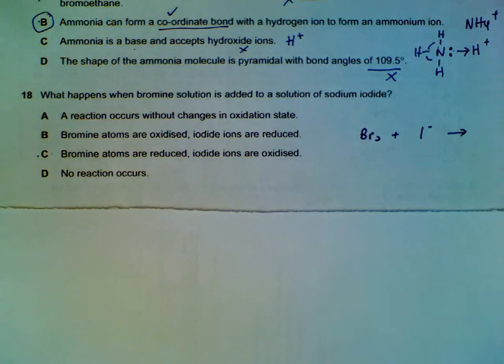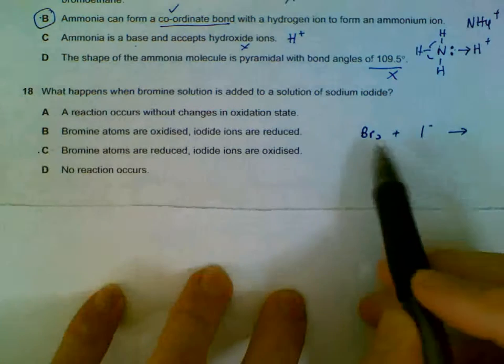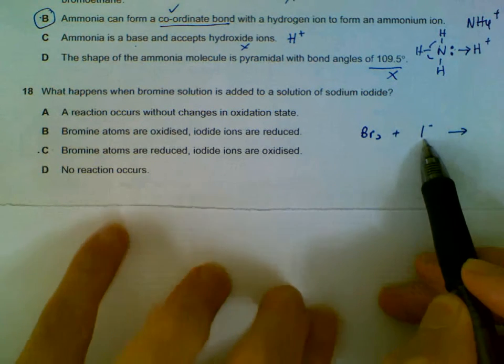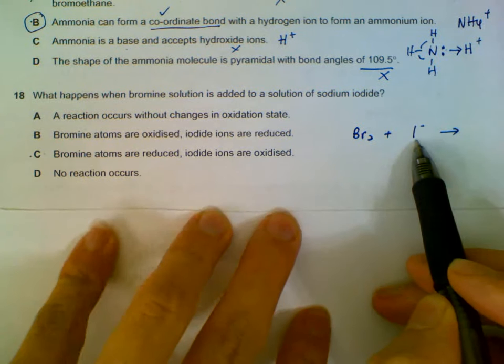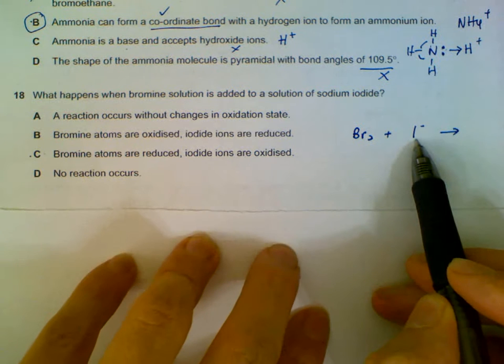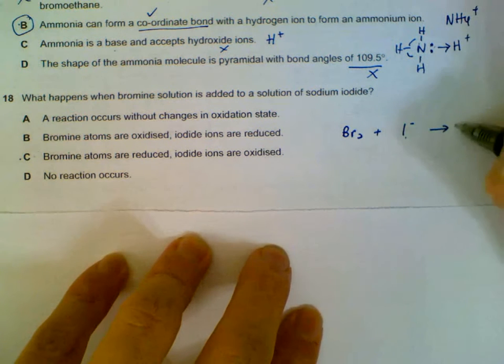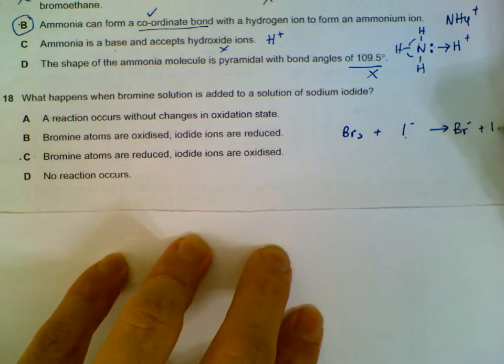Bromine solution added to sodium iodide. Now, bromine solution and iodide - bromine will be able to oxidize iodide, and then what happens is we get Br minus and iodide becomes iodine.